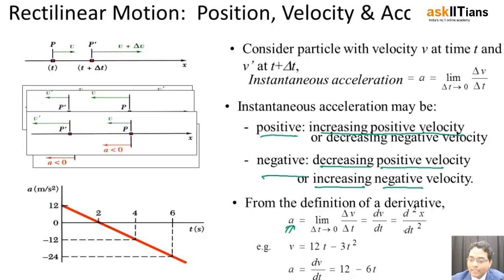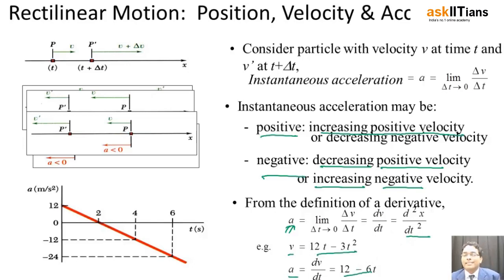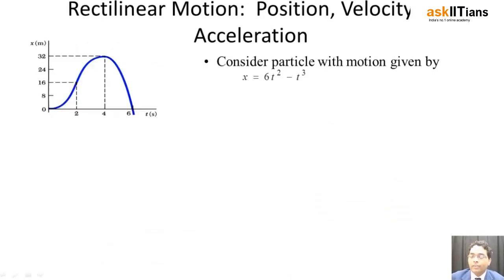If the acceleration is given by the second derivative of x with respect to time, and we know that the velocity is given by 12t minus 3t squared, then the acceleration is obtained by differentiating once more — that is the second derivative of x with respect to time.